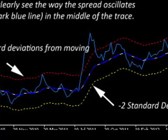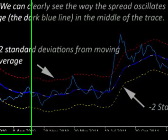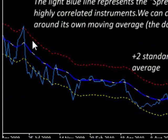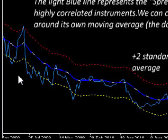The idea behind ARB is to basically set upper and lower trigger levels. The upper trigger level is the dotted red line, and the lower trigger level is the dotted yellow line.